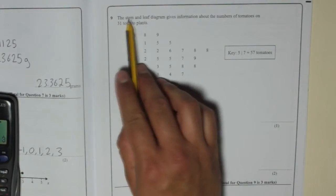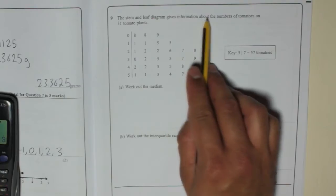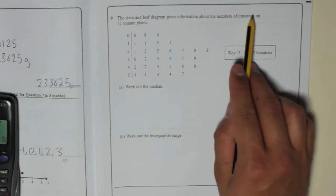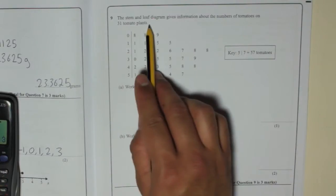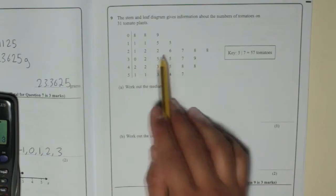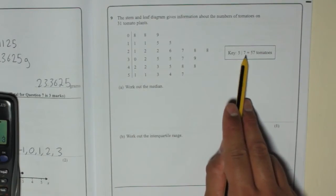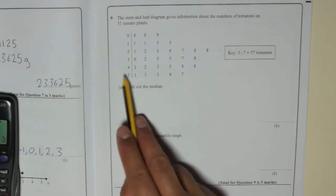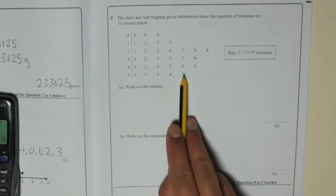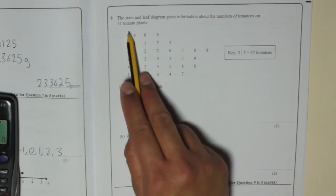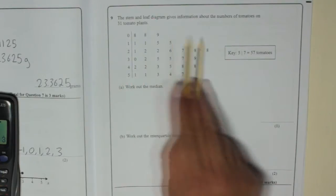Question 9: The stem and leaf diagram gives information about the numbers of tomatoes on 31 tomato plants. Here's the key. It means 5 line 7 means 57 tomatoes. So for example, 5, 7. That 7 there means 57. So you know that these are all the tens and these are all the units.